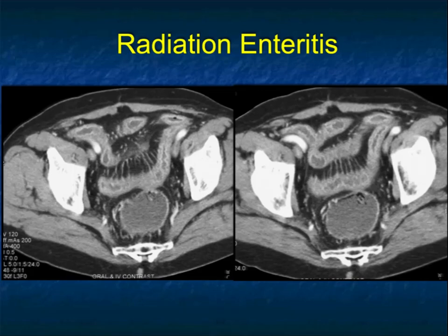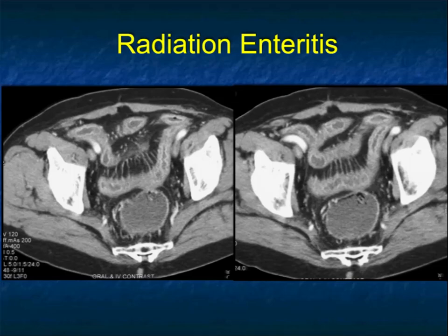We also spoke about radiation enteritis, which we see a lot less of these days because the fields are better targeted and doses are better given. The old days, we talked about radiation hepatitis, radiation involvement of the kidneys and spine, and changes from radiation in patients who had Wilms tumors and neuroblastomas as they get older, including scoliosis. Let's stop at this point and pick up part two with radiation enteritis.